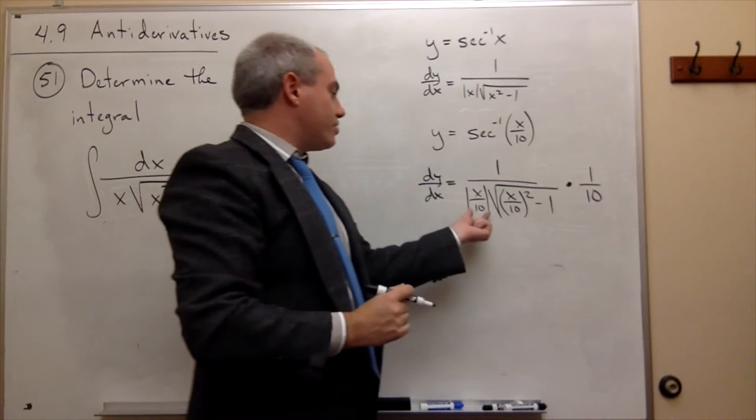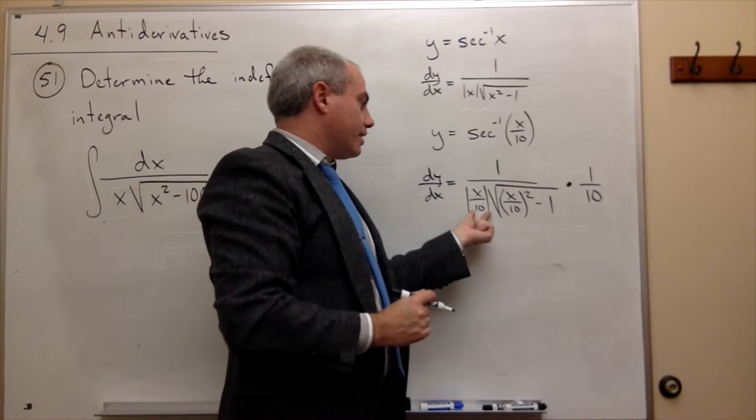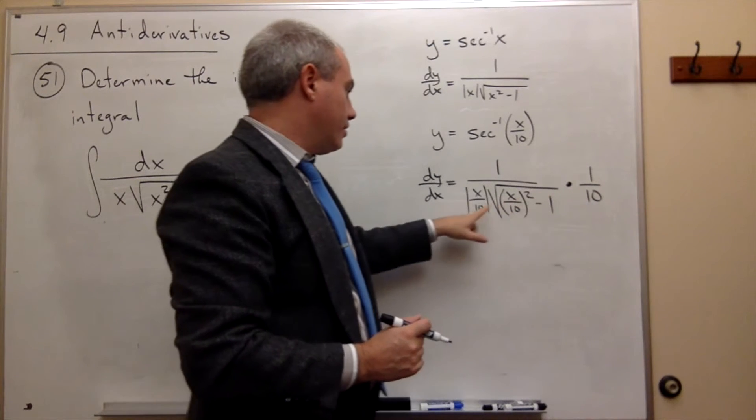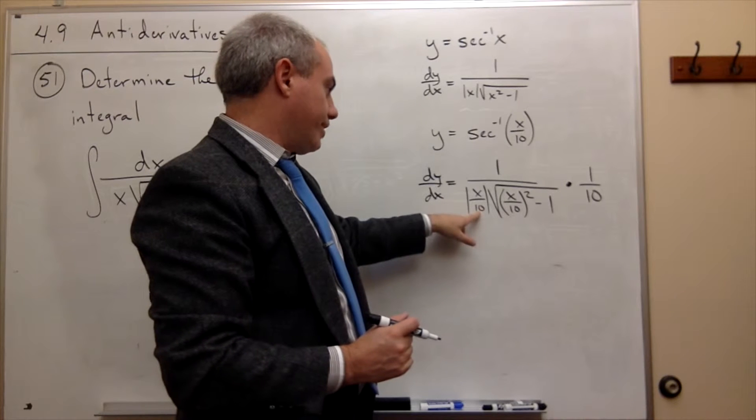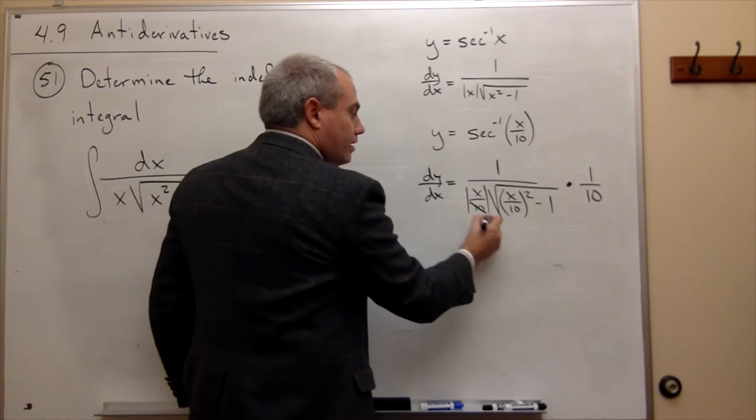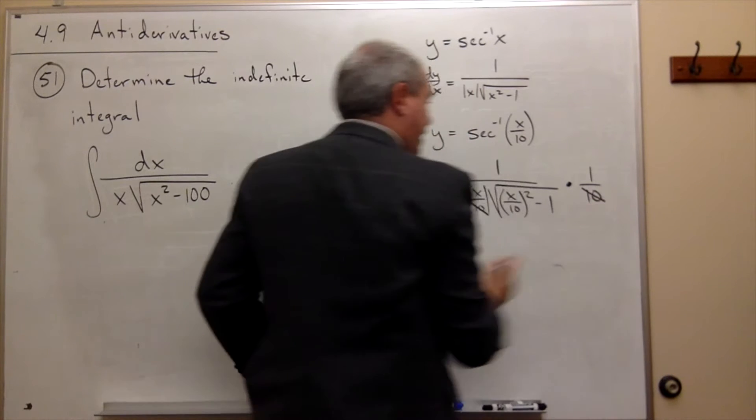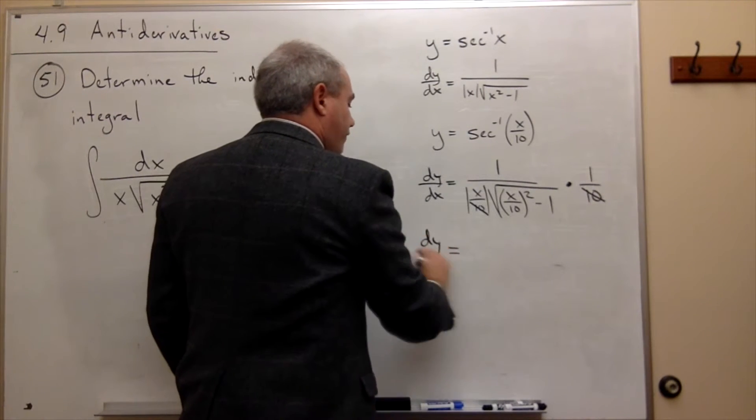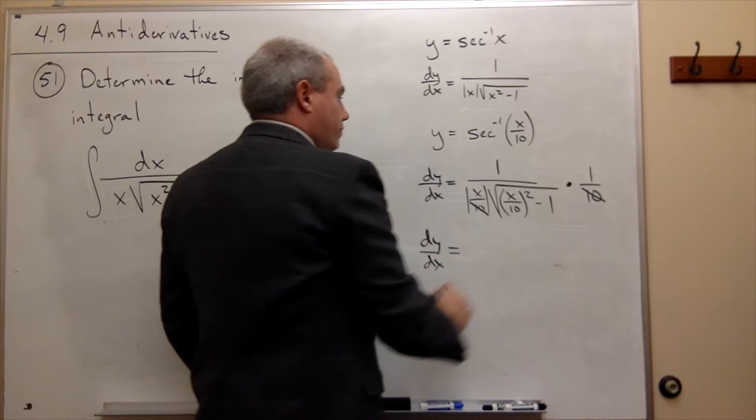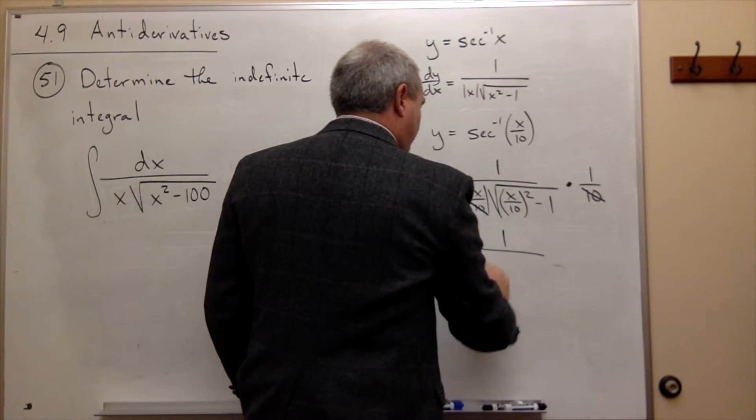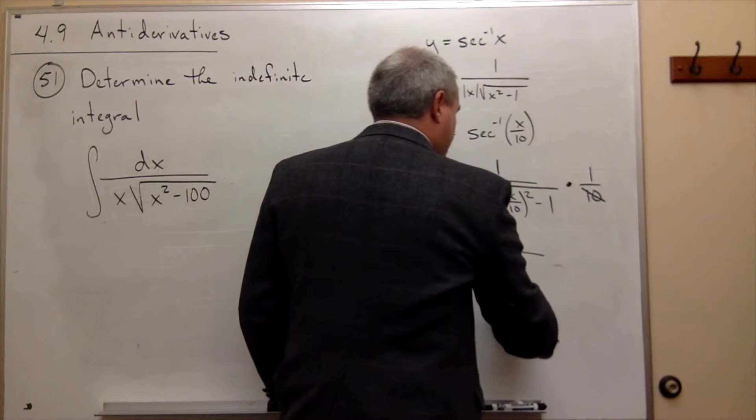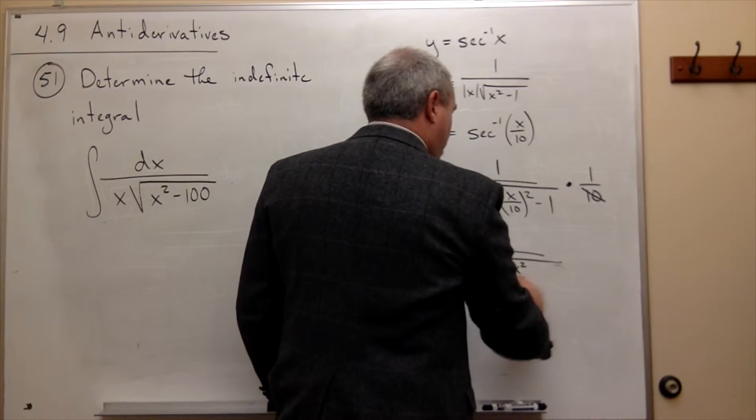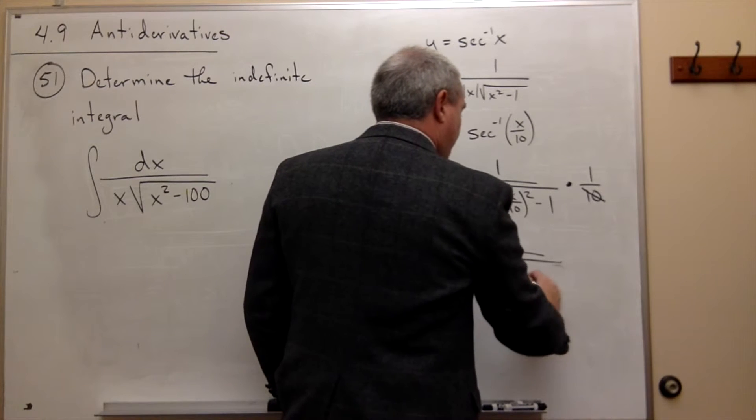Now, I could move this 1/10 inside. Notice that this 10 cancels with this 10. And so, these tens cancel, and I'm left with dy/dx equals 1 over |x| times the square root of x squared over 100 minus 1.